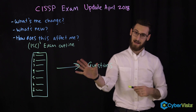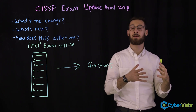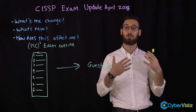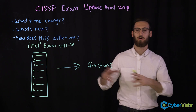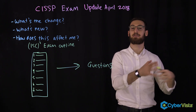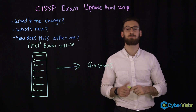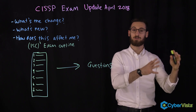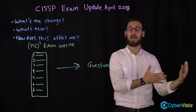Now, this update that ISC Squared is doing to the content is a distinct update from the last one you heard about, which was about the exam format. Remember when the exam went from 6 hours to 3, or from linear to CAT? That was about the exam format. This update — the April 2018 one — is about exam content. And just to be clear, those who are going to be taking the new exam will be taking a CAT.